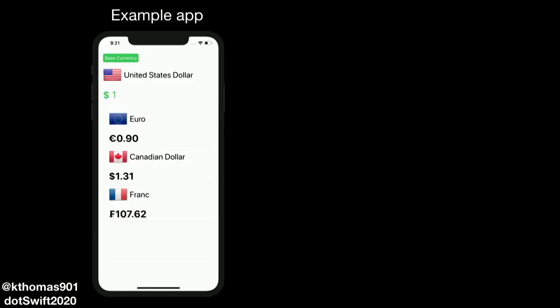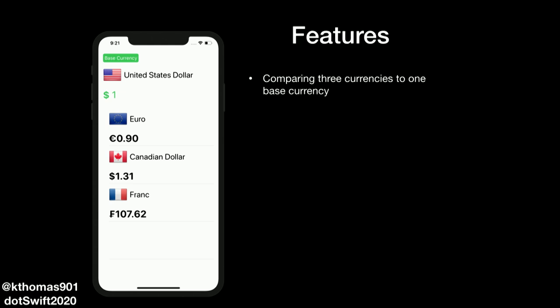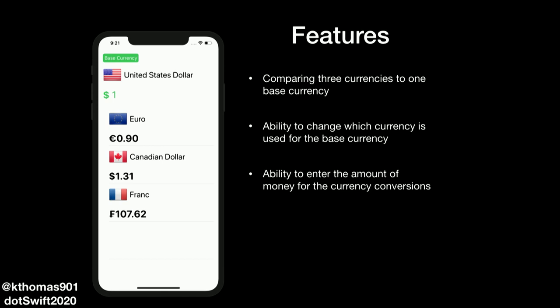We'll start off with enums. The example app we'll be using throughout the talk is written in SwiftUI and has four main features: comparing three currencies to one base currency; the ability to change which currency is used for the base by selecting one in the table; the ability to enter the amount for currency conversion; and displaying country currency names with their flags.